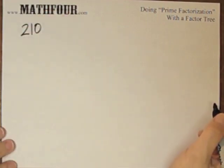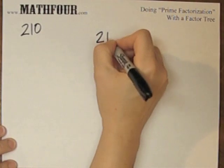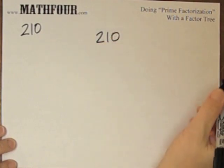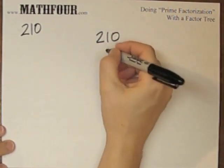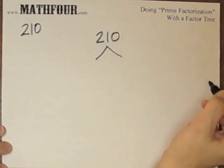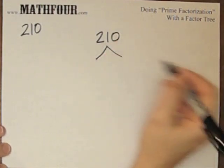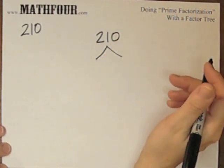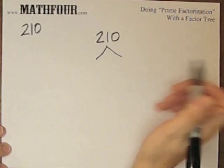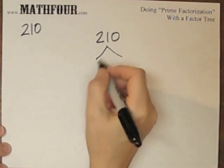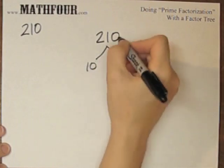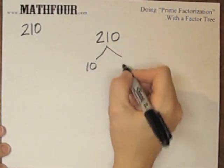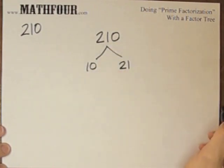So if I want to factor this number into primes, I start with 210, and then I look at it and go, okay, what can I separate this into? At least two pieces — you can do three, but then you're getting into some really interesting factor tree methodology. I see that there's a 10 in it, because it ends in zero, and there's a 21 in it.